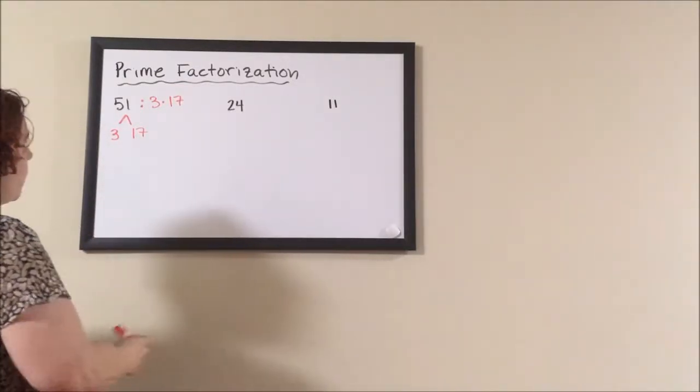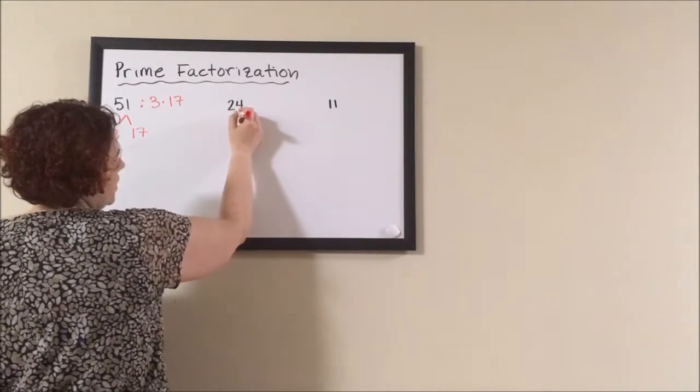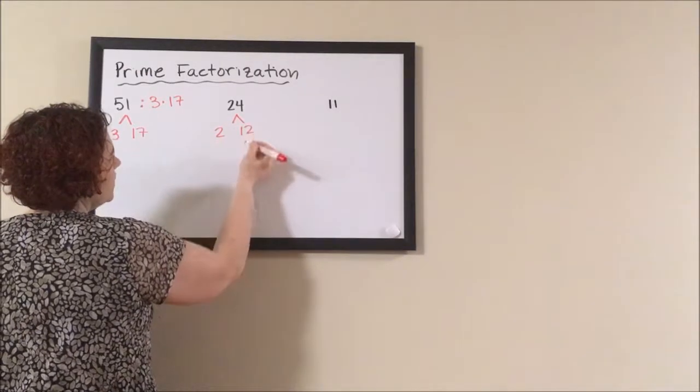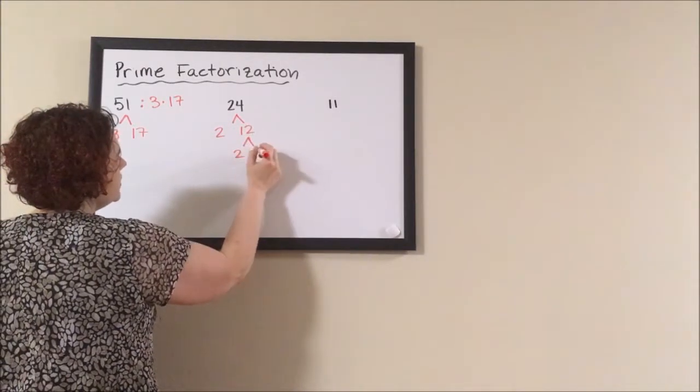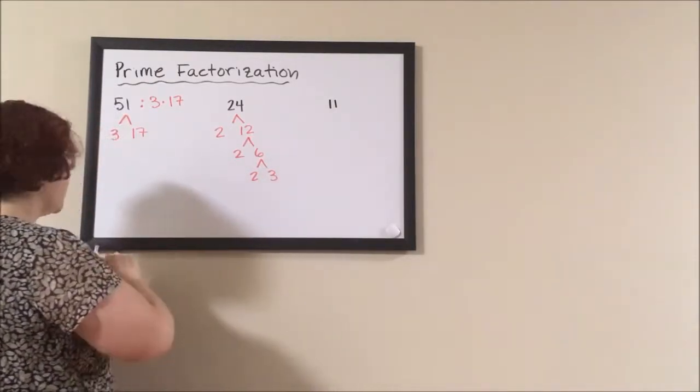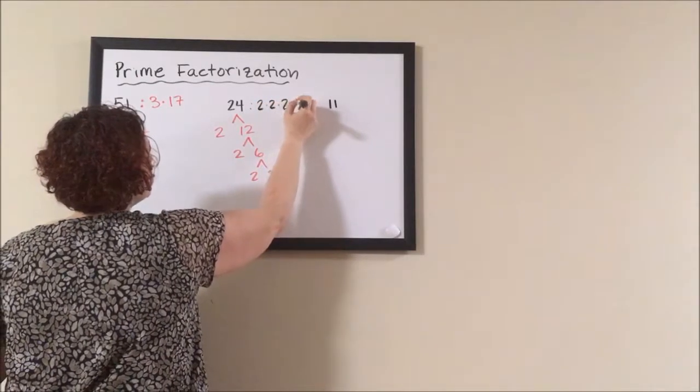For 24, if we take out a 2, we have 2 times 12. 12 is 2 times 6, and 6 is 2 times 3, which leaves our prime factorization to be 2 times 2 times 2 times 3.